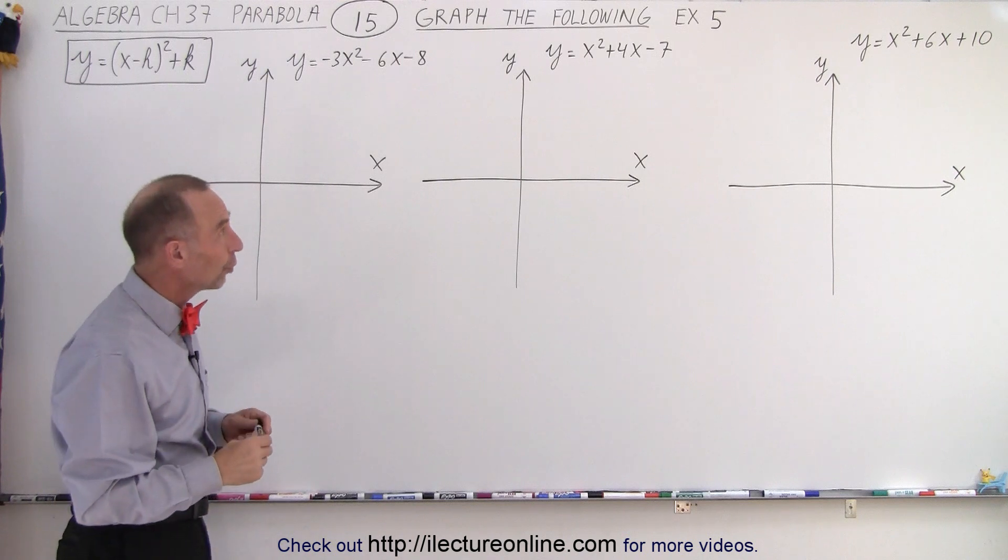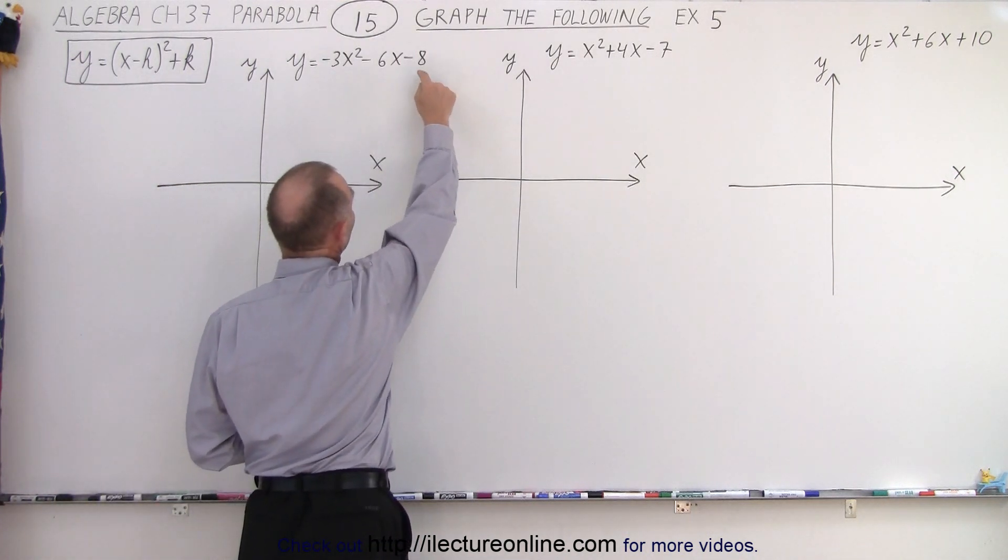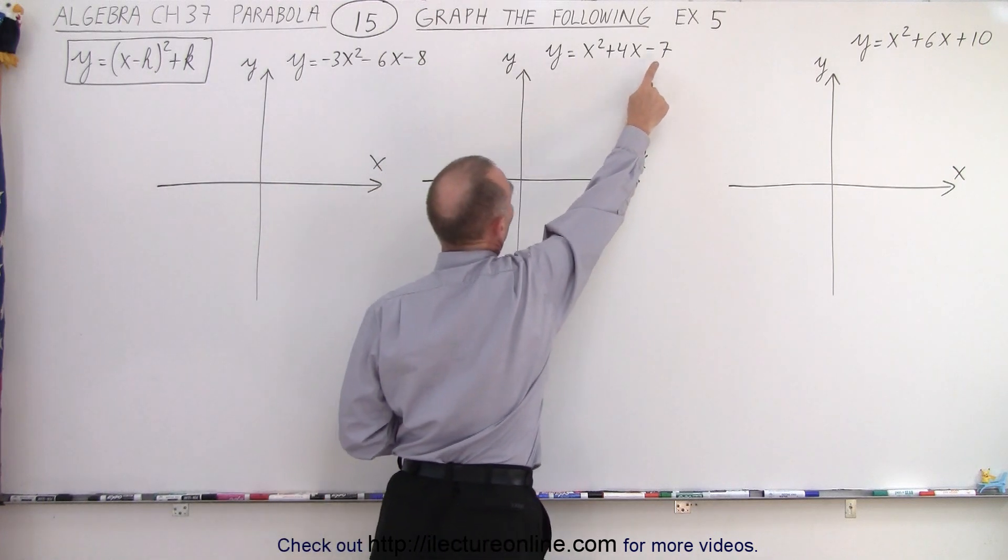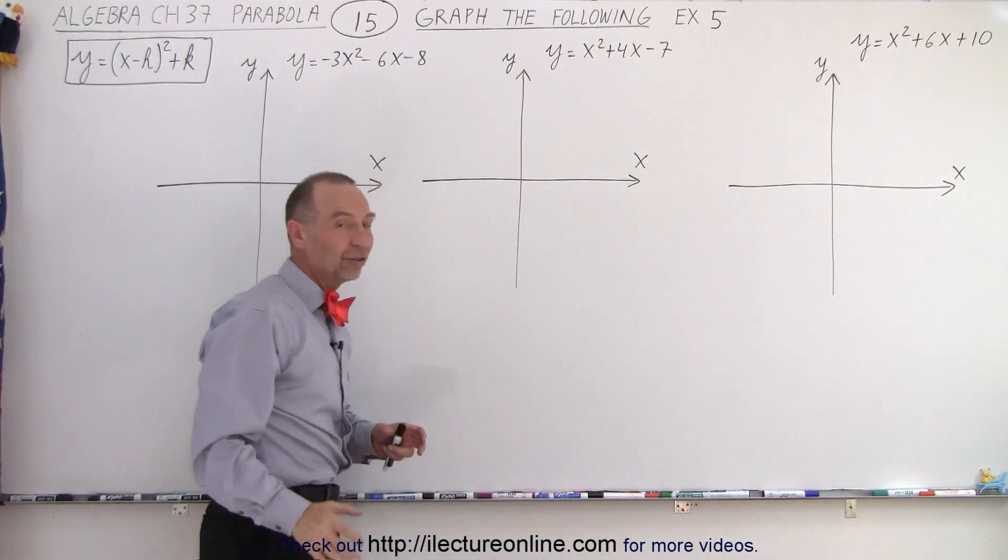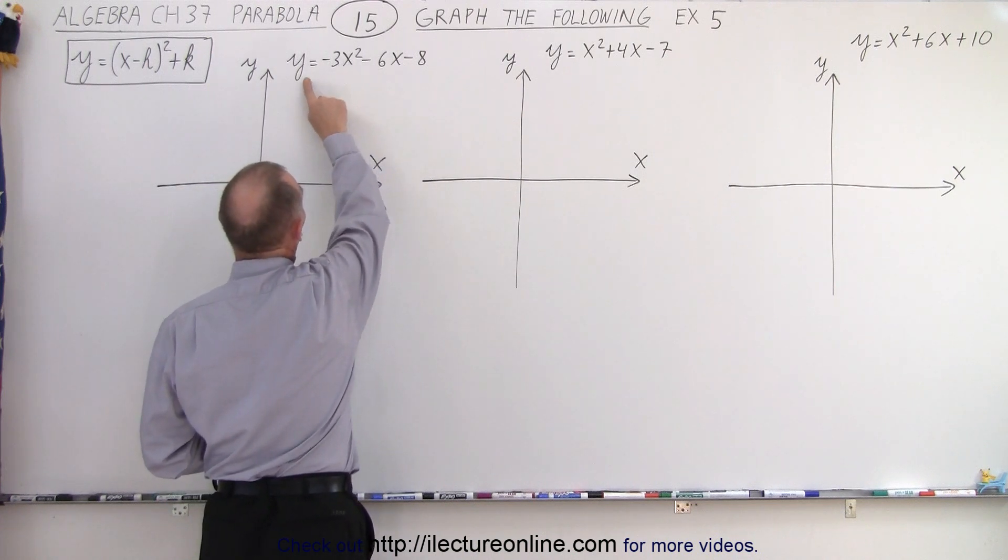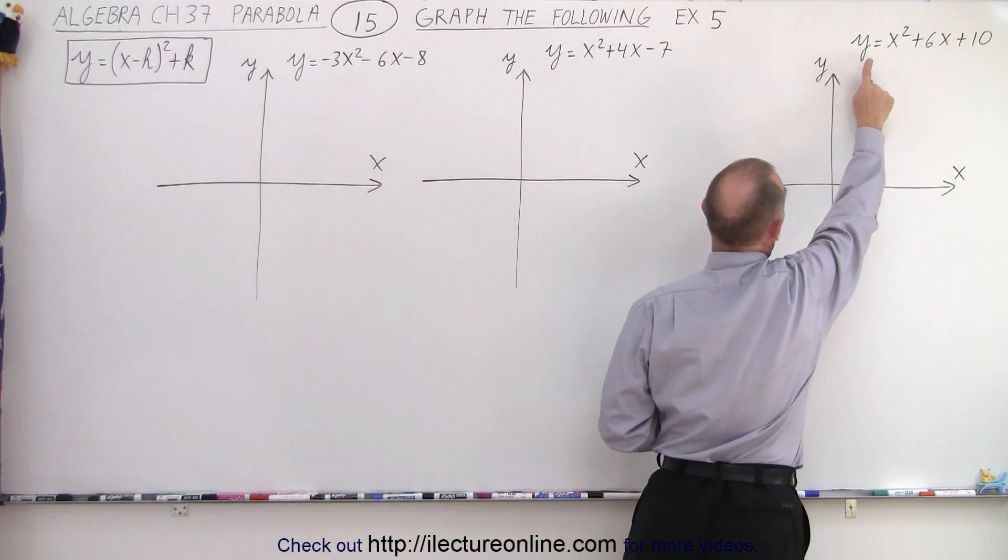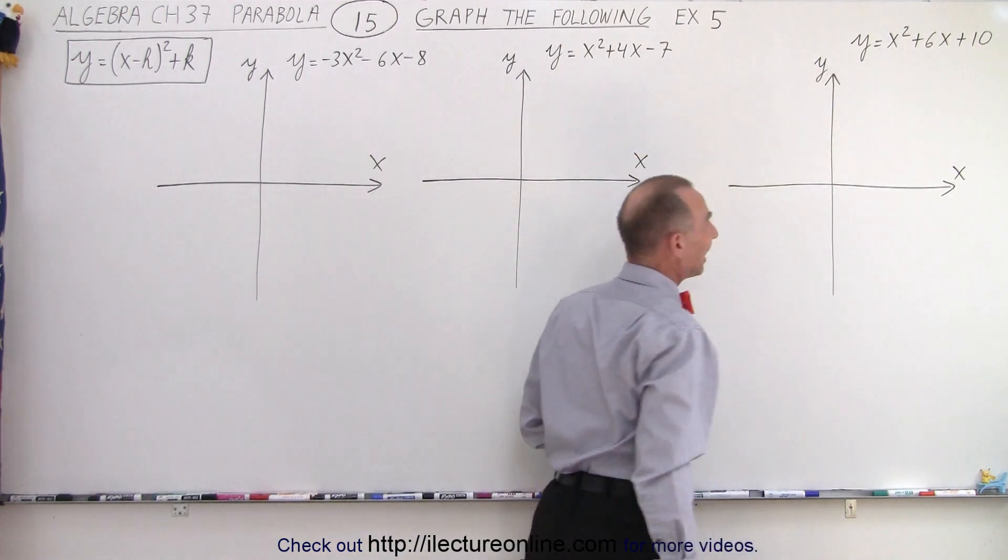In this case we're also going to use the advantage that since the equation is written in this format, we already have the y-intercept. The constant at the very end is always going to be the y-intercept because when you let x equals 0, y will equal negative 8. When x equals 0, y equals negative 7. When x equals 0, y equals 10.